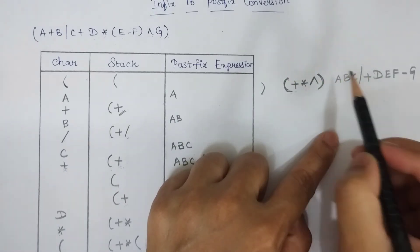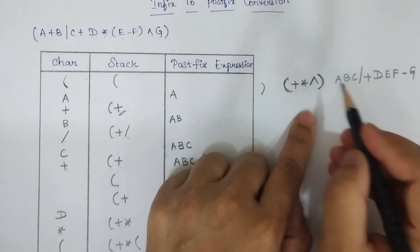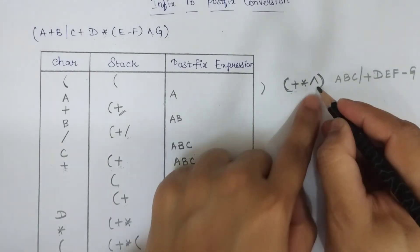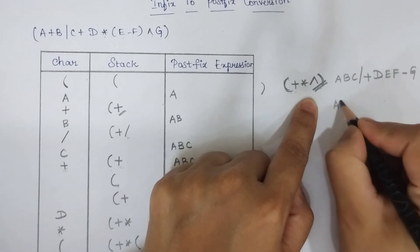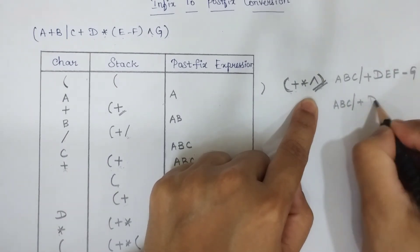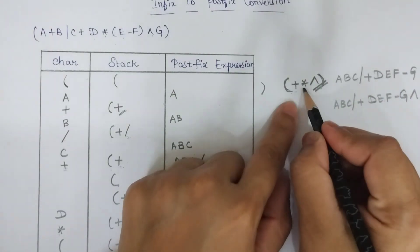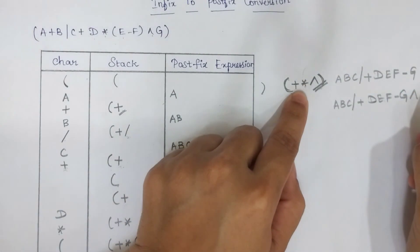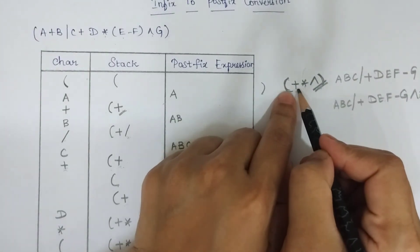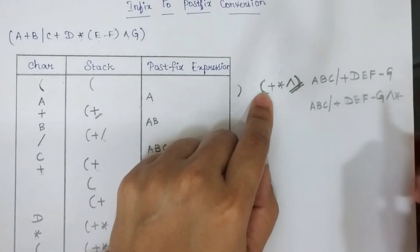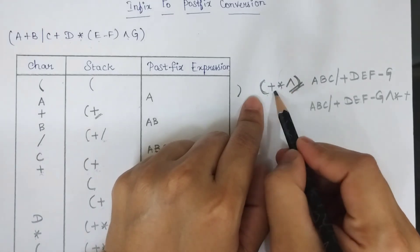Pop out all those operators and add them to the postfix expression, starting from the top of the stack. The exponent is at the top — pop it and add it to the postfix expression. Then pop multiplication and add it. Then pop plus and add it to the expression.